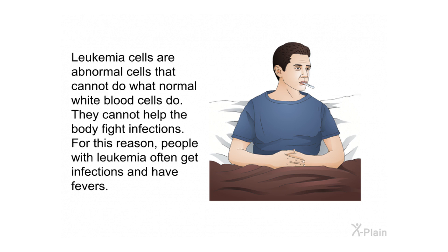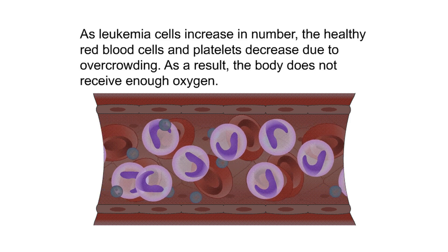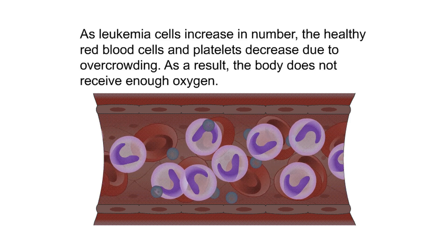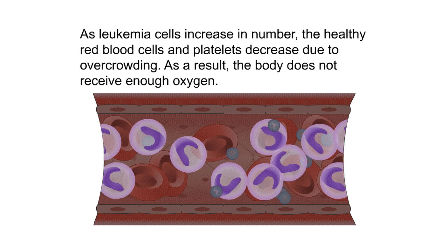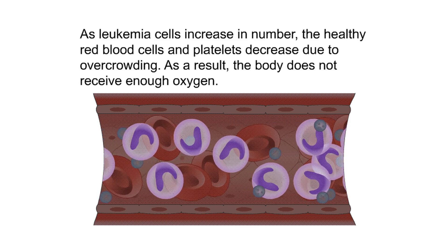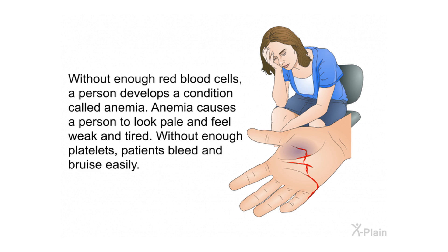Leukemia cells are abnormal cells that cannot help the body fight infections. For this reason, people with leukemia often get infections and have fevers. As leukemia cells increase in number, healthy red blood cells and platelets decrease due to overcrowding, and the body does not receive enough oxygen. Without enough red blood cells, a person develops anemia, causing them to look pale and feel weak and tired. Without enough platelets, patients bleed and bruise easily.